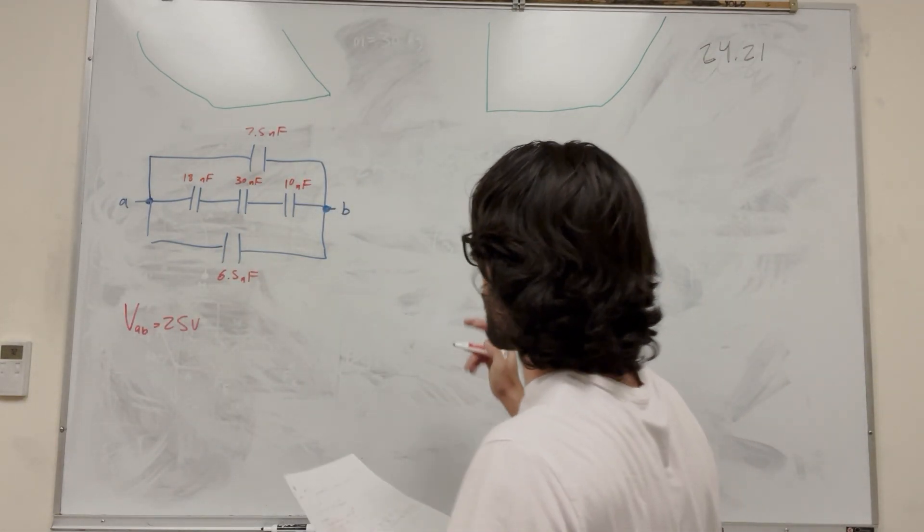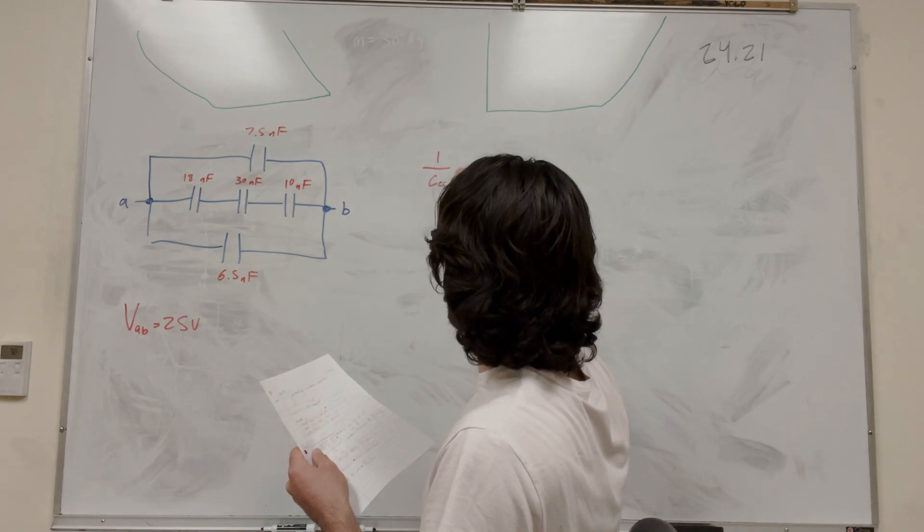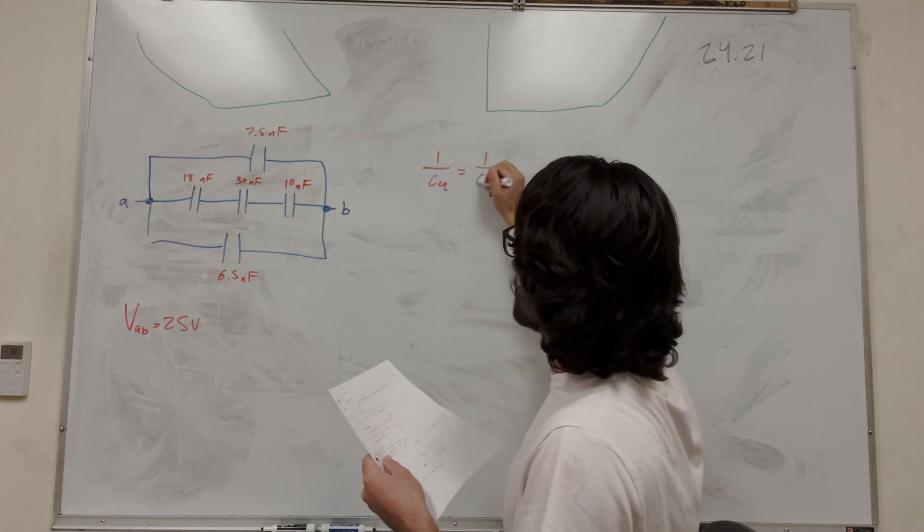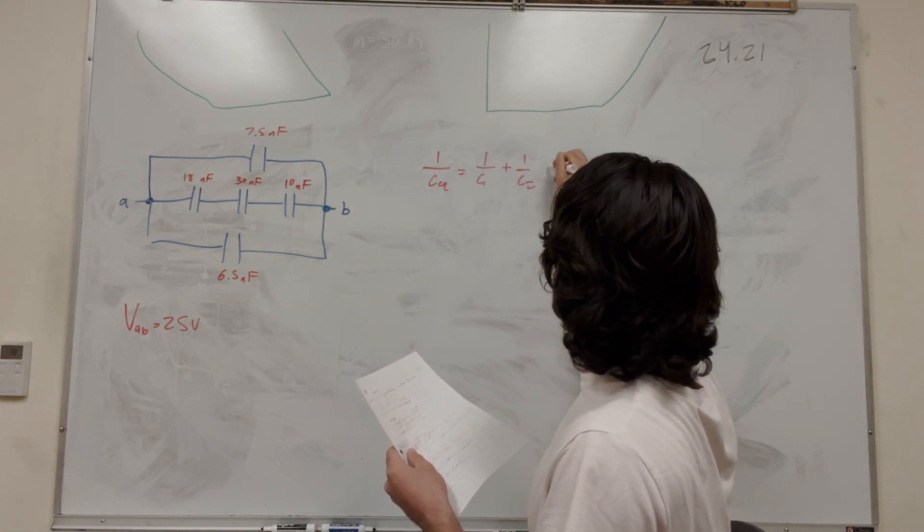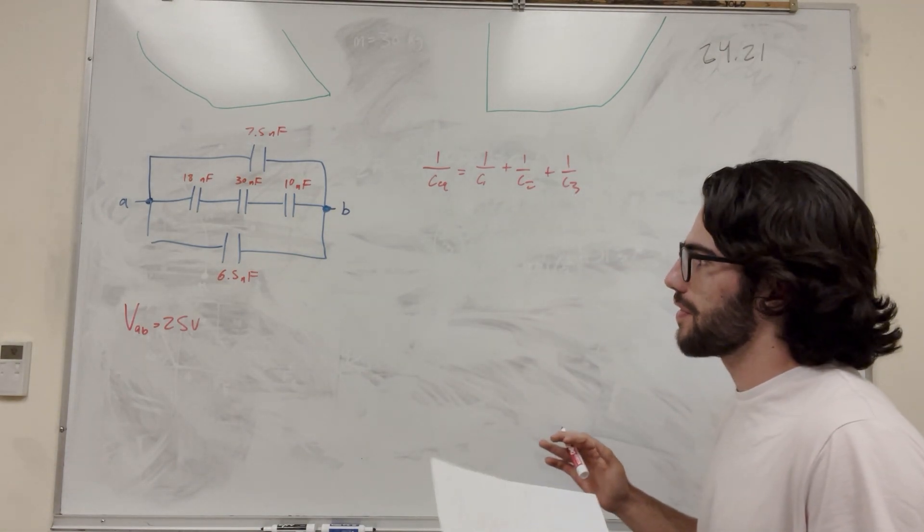So starting in the series, we know that 1 over C equivalent is equal to 1 over C1 plus 1 over C2 plus 1 over C3. This is how you do it for series.